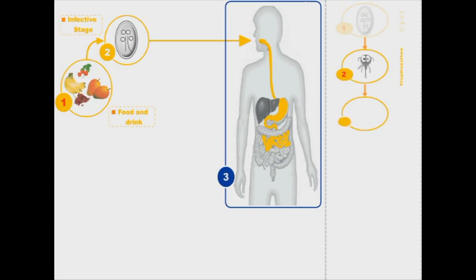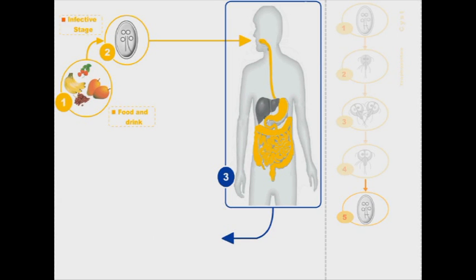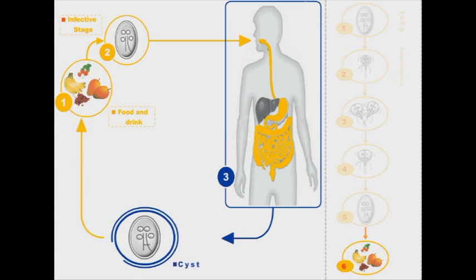During its journey in the small intestine, the trophozoites divide by binary division. In the large intestine, the trophozoites are encysted again before being released into the stool. Then Giardia repeats its fecal-oral route.